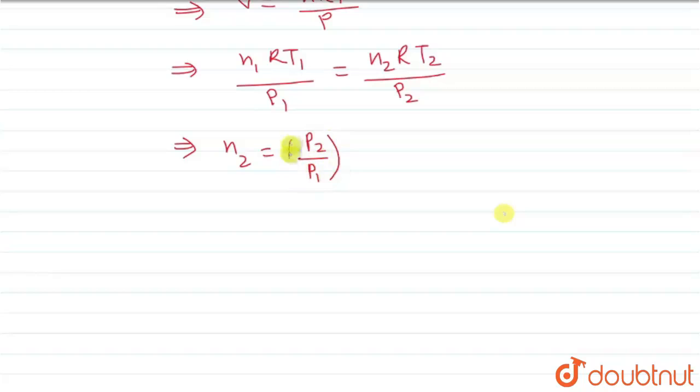So n2 = n1 × (P2/P1) × (T1/T2). Given P2 = P/2, P1 = P, T1 = 500K, and T2 = 300K. For hydrogen gas, n1 = 6 grams / 2 g/mol = 3 moles.